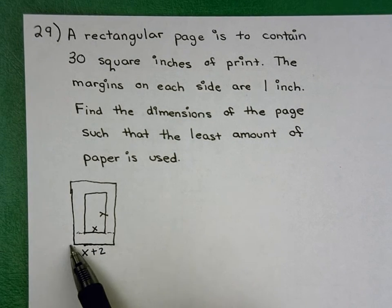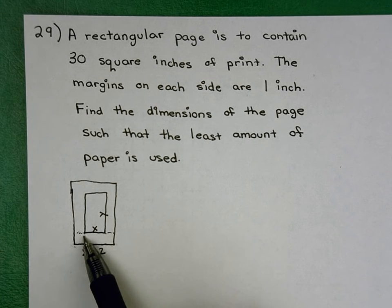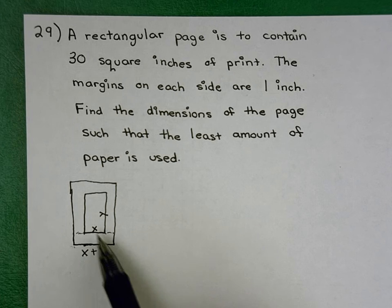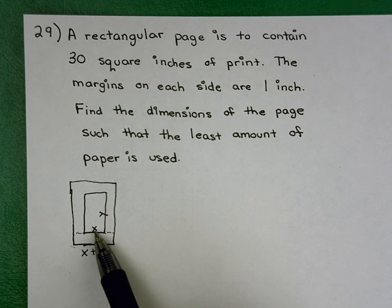If I had called the outside X, then this inside piece would have been X minus 1 and minus 1. If this whole thing outside here, if I had called this X, then the inside would have been X minus 2, subtracting the two margins to get this smaller.